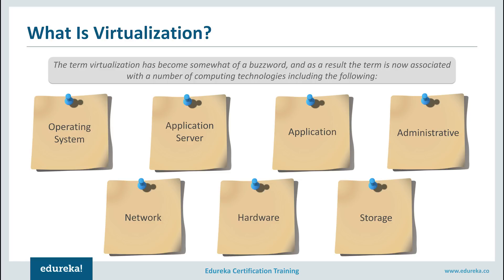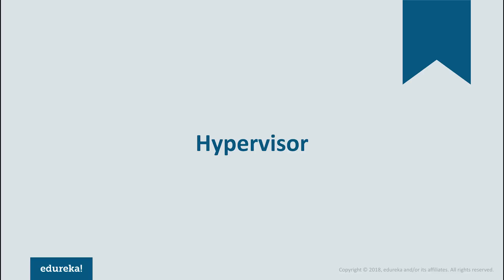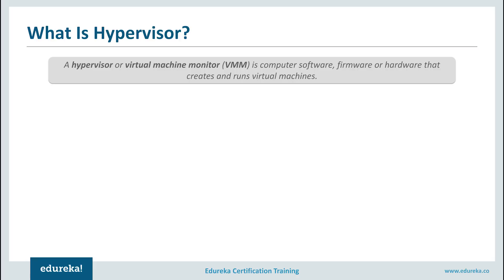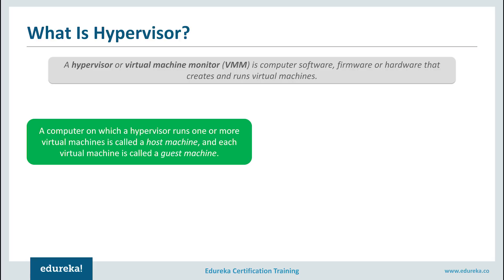So those were the different types of virtualizations. Now let's move further and understand what a hypervisor is. It is nothing but a virtual machine monitor. We just discussed virtualization technique — how do we bring about this virtualization? To do that we have something called hypervisors.